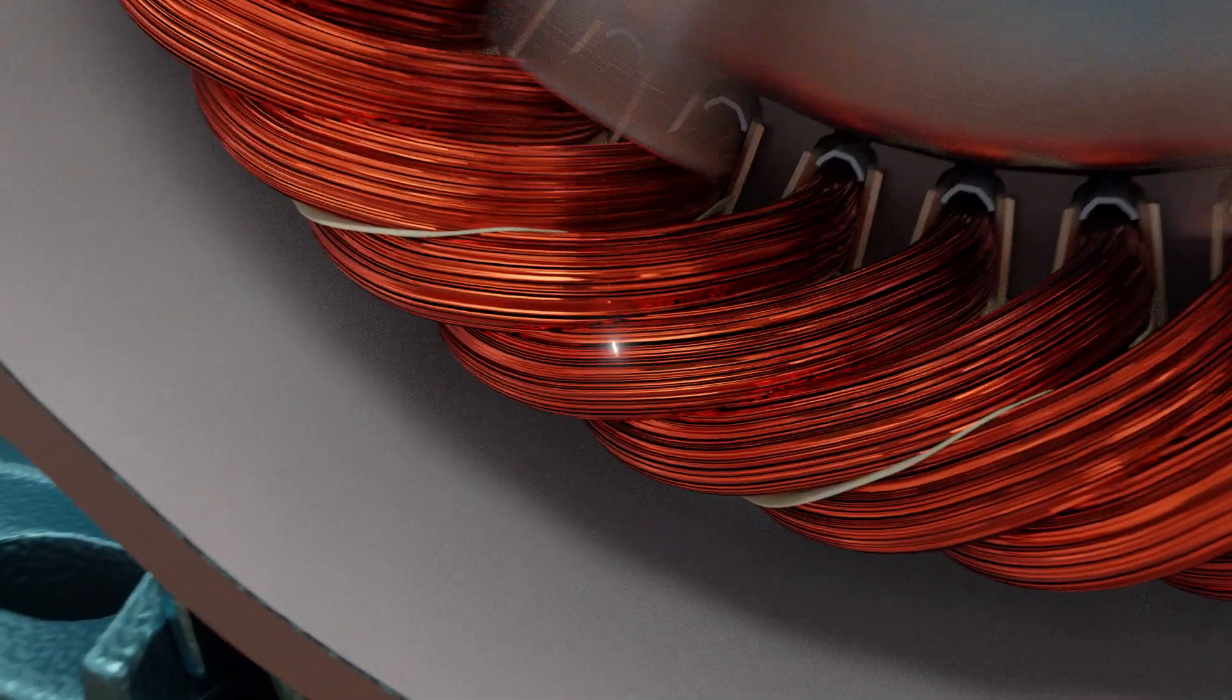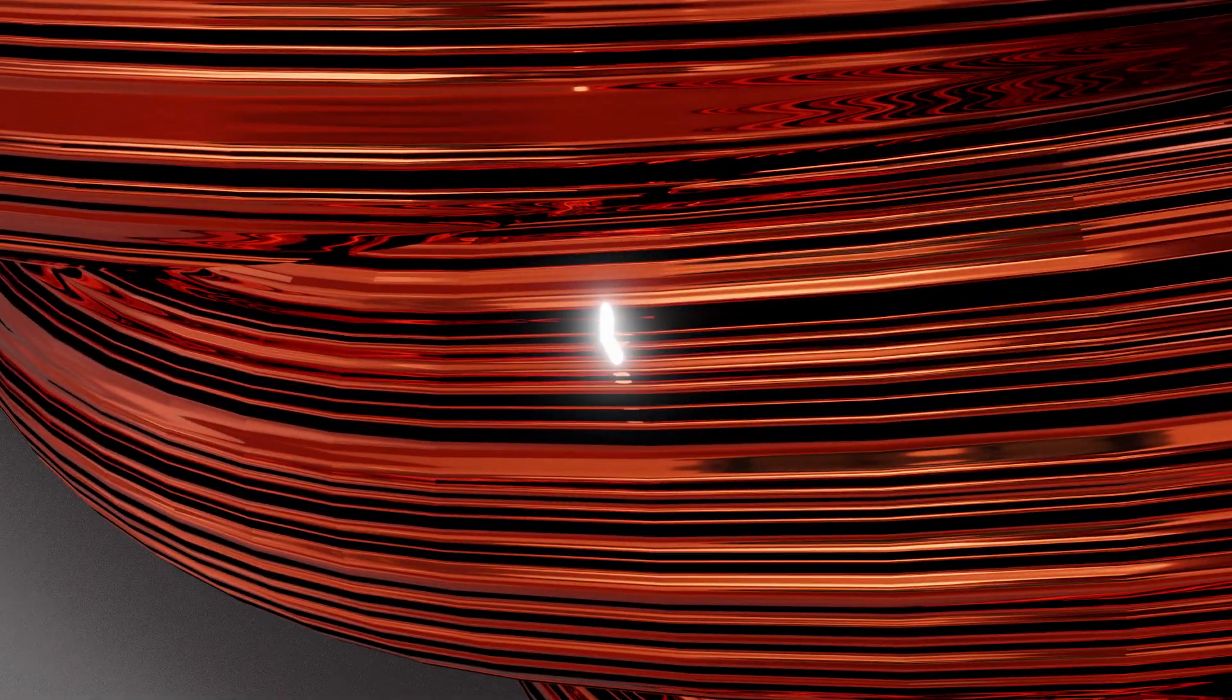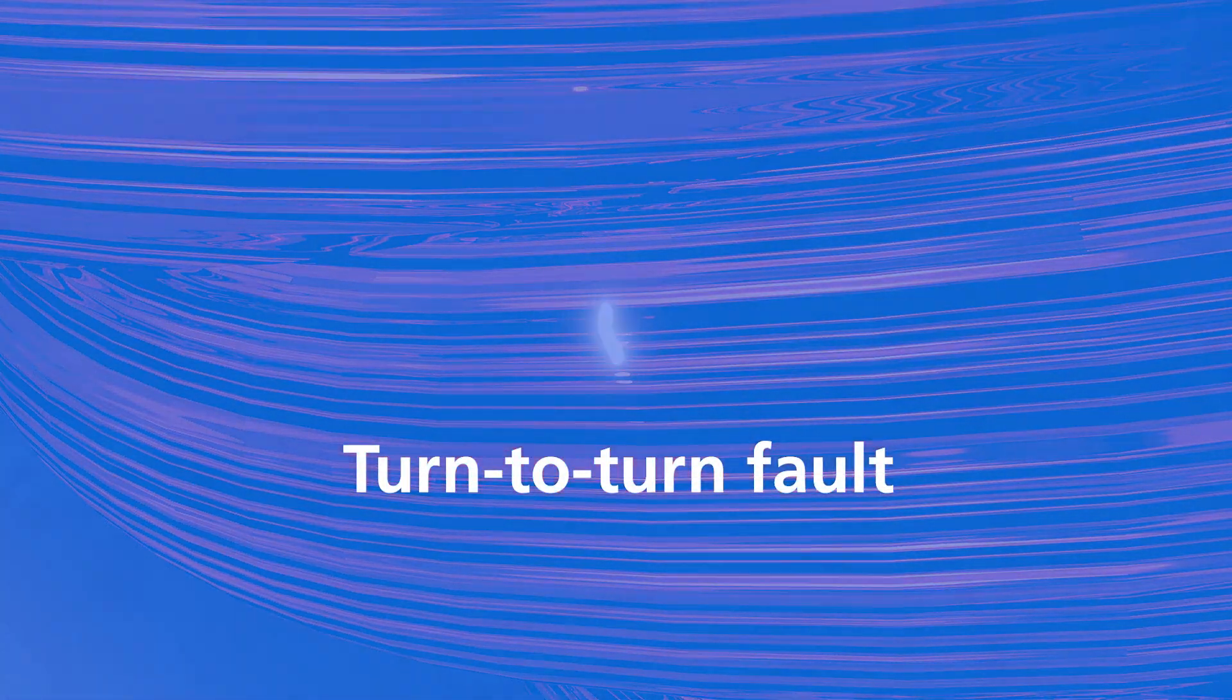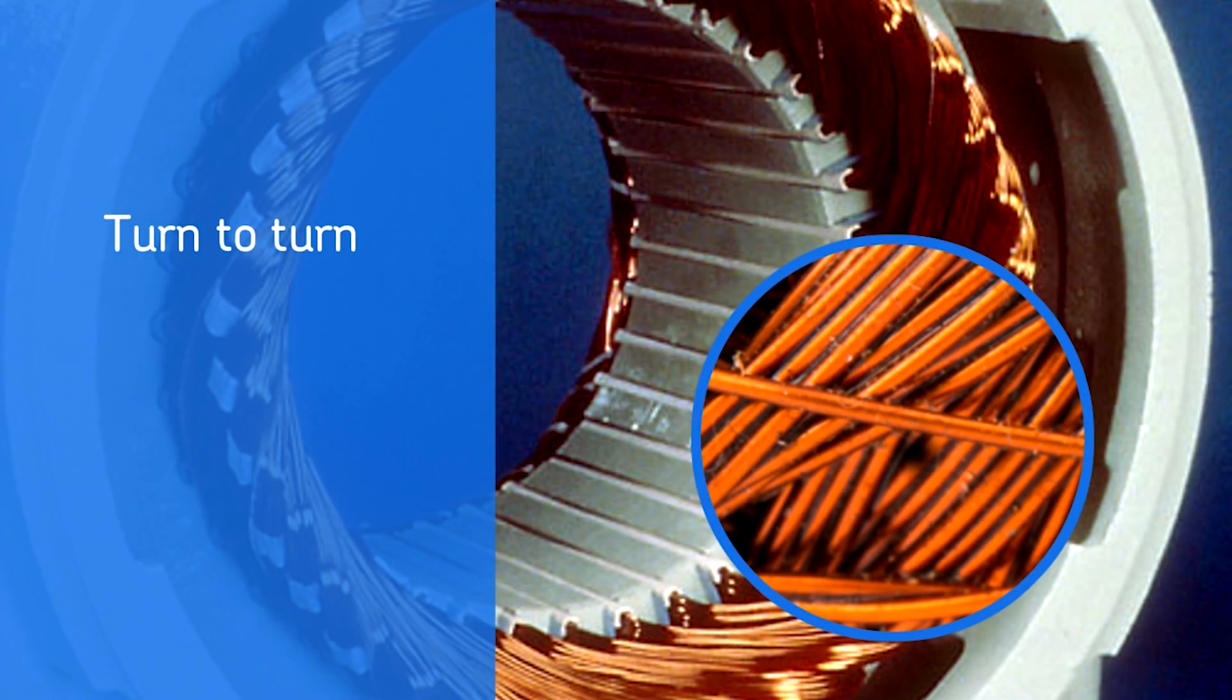The most common insulation failure is between turns of wire that are next to each other in the same coil. This is called a turn-to-turn fault. Other wire-to-wire insulation faults are phase-to-phase and coil-to-coil.